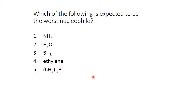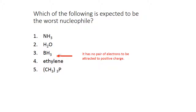Which of the following would be the worst nucleophile? Ammonia has a non-bonding pair on the nitrogen. Water has a non-bonding pair on the oxygen. Ethylene has a pi bond that can act as a nucleophile. Phosphorus is like nitrogen and has a non-bonding pair. The only thing that will not act as a nucleophile is borane. It is a Lewis acid with no pair of electrons to be attracted to a positive charge. The only electrons it has are in bonds, and they're used up and not available to react as a nucleophile.